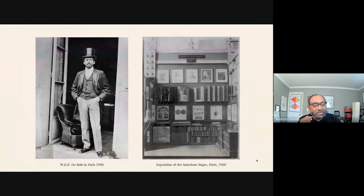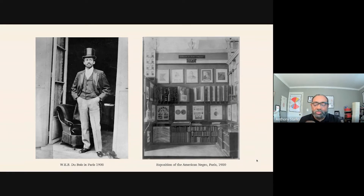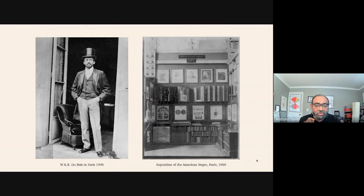This is Du Bois in 1900, 32 years old in Paris. His idea was to tell the story of the progress of Black people since emancipation. On the left, you have his picture — he had just come over from steerage. He worked on the project very, very quickly to get it out to tell the world. On the right-hand side, you see the venue for the exposition.